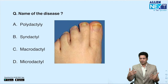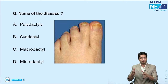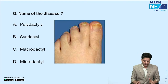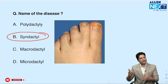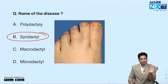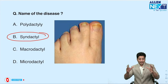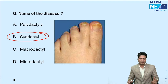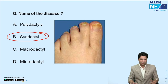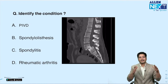Congenital hand/foot conditions: syndactyly — fusion of two or more toes or fingers. Polydactyly — more than five toes or fingers in a single hand or foot. Macrodactyly — digit larger in proportion compared to others. Microdactyly — digit smaller in proportion compared to others.